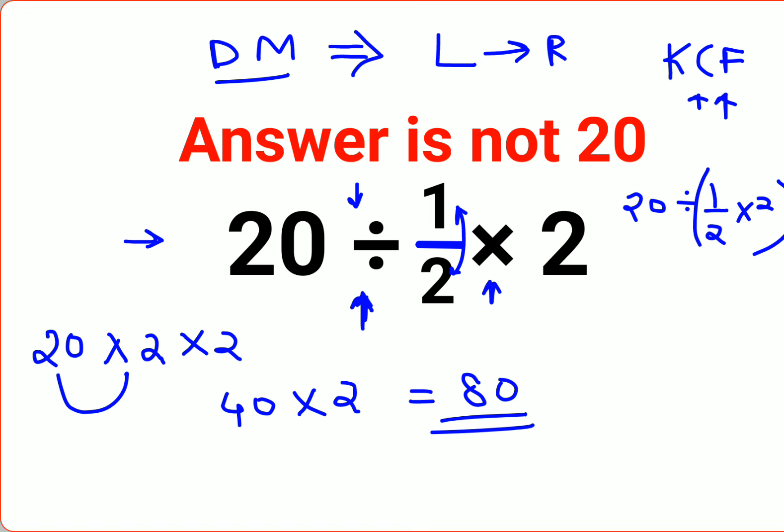According to BODMAS and PEMDAS, both give preference first to the brackets. So if the brackets are given, then the answer is supposed to be 20. Otherwise, the answer will be 80 for the given question.